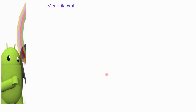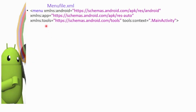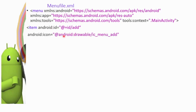We have a menu file. As usual, we have the menu tag with the XML namespace and the Android name appended as the namespace. This is the first item which will be added. The first item has an ID. If the item is added, it will default to adding an icon — it will be added with the add icon.